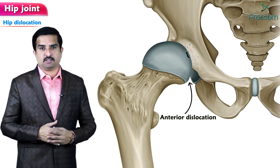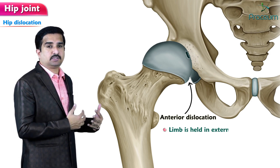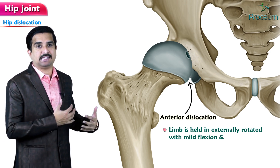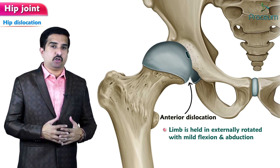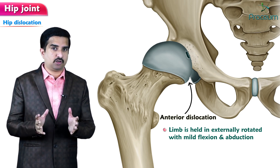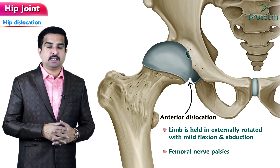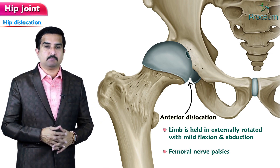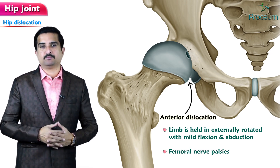In anterior dislocation, the limb is held in external rotation, mild flexion, and abduction. Because it is an anterior dislocation, femoral nerve palsies can be present, whereas sciatic nerve palsy is associated with posterior dislocation. Anterior dislocation of the hip joint is pretty uncommon.